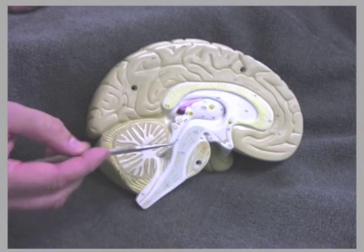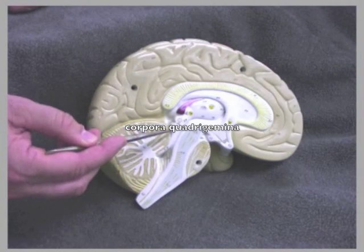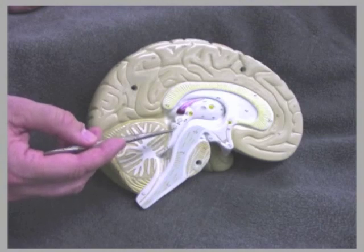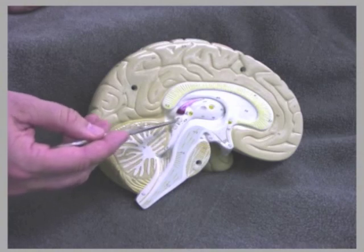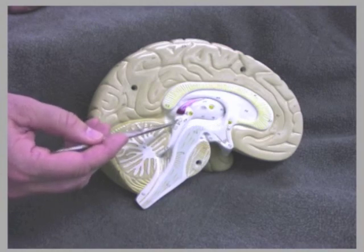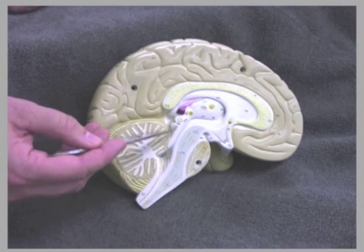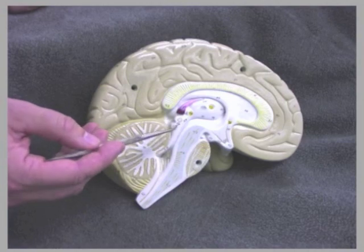A couple features of the midbrain include the corpora quadrigemina — these two bumps here. Corpora quadrigemina means the four twin bodies, so we'll see two on this side. The upper one is referred to as the superior colliculus, and there's a matching body on the other side of the brain — this is for visual reflex. The one down here is called the inferior colliculus, and that is for auditory reflex.